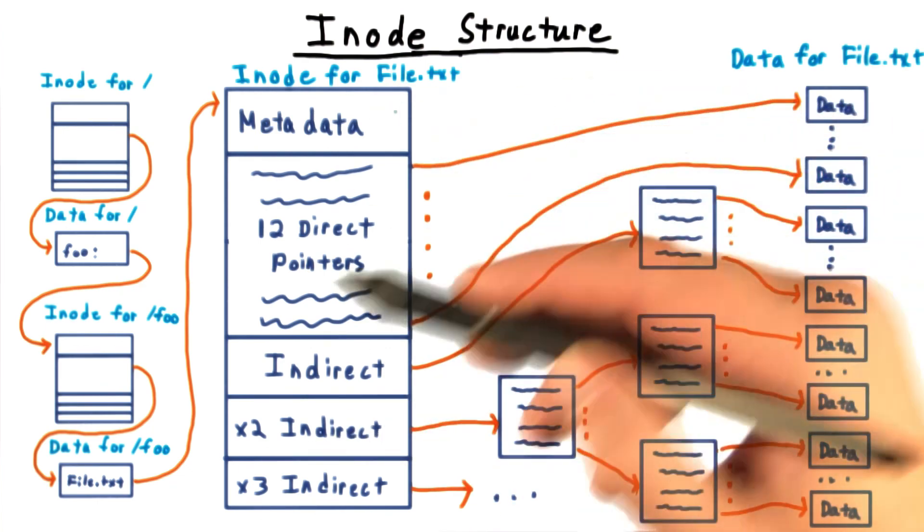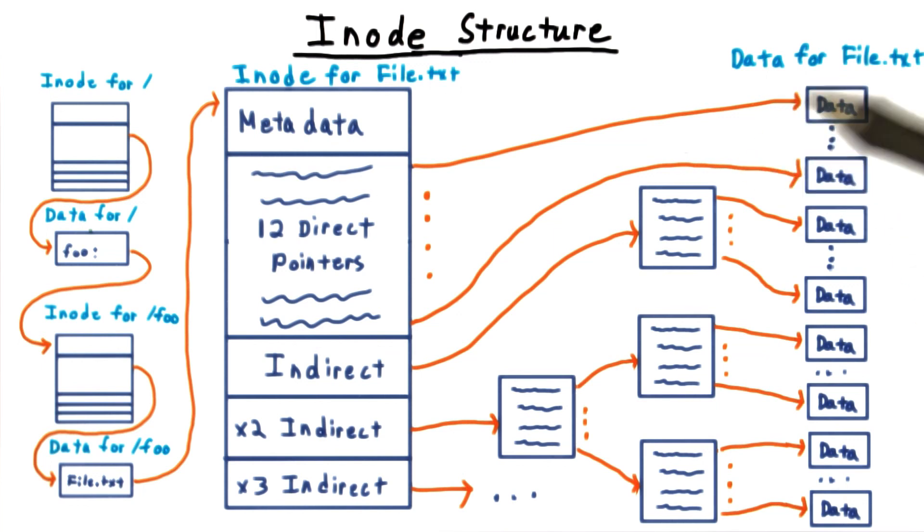File creation means grabbing an inode and updating the parent directory. This is not substantially different from FAT. File growth just means grabbing a new data block and updating the inode. No big deal.